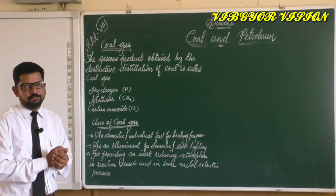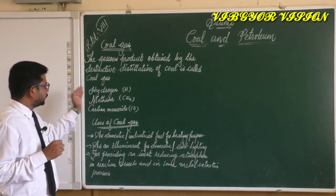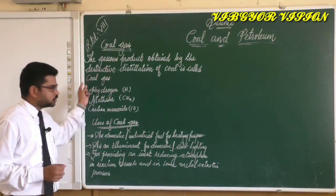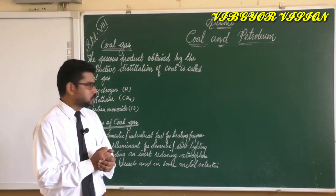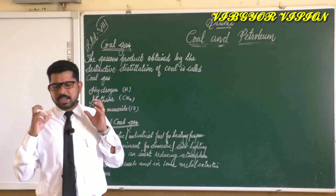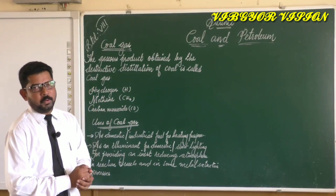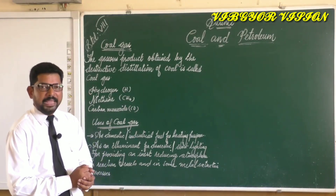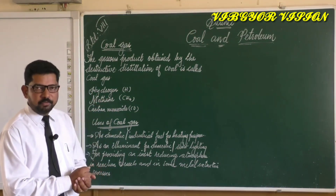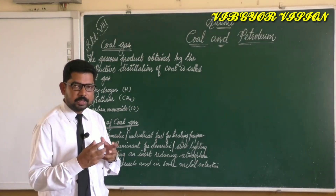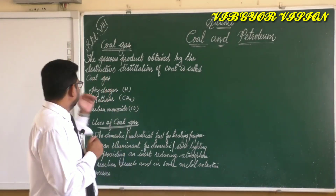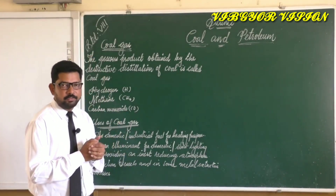Coal gas is an excellent fuel. Chemically, coal gas contains hydrogen, methane, and carbon monoxide. It has a very high calorific value because hydrogen and methane — both of which are good fuels with high calorific values — are its main components.